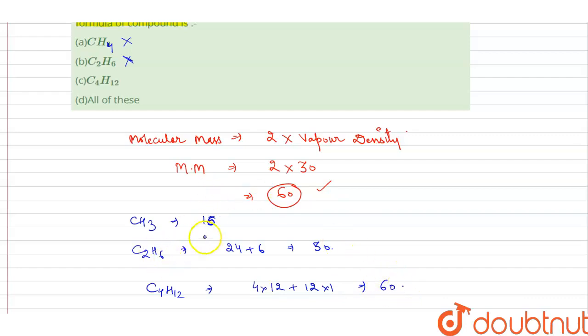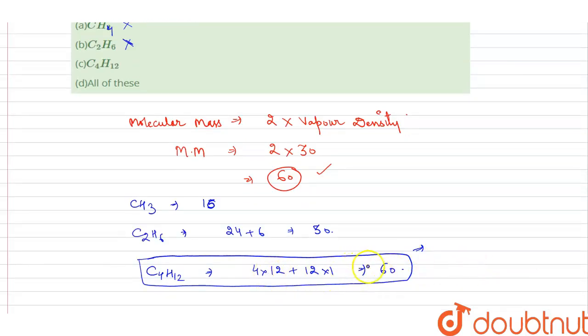So this hydrocarbon C4H12 has molecular mass 60. In this, we can see that the mass of carbon constitutes 80%, because 48 upon 60 times 100...